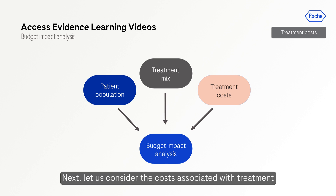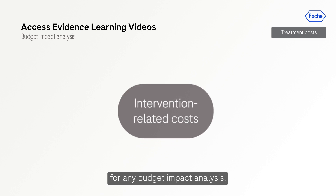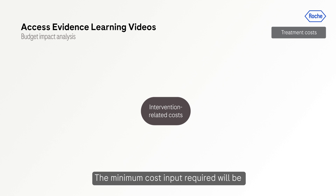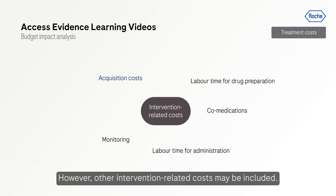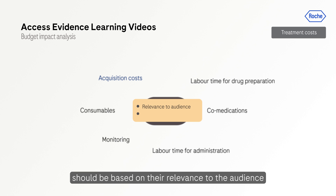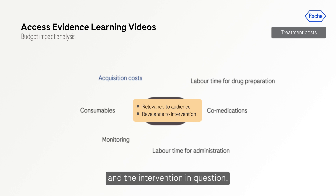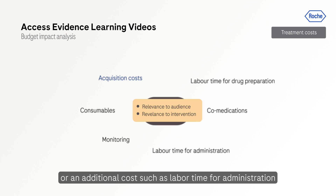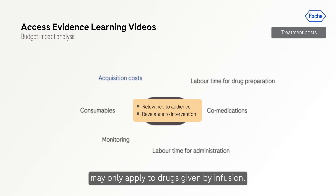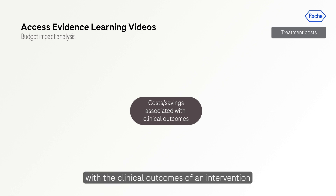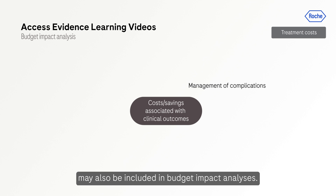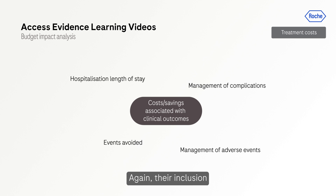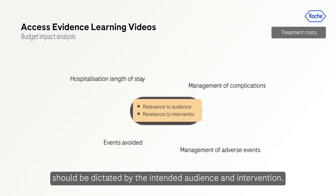Next, let's consider the costs associated with treatment. For any budget impact analysis, the minimum cost input required will be the intervention acquisition costs. However, other intervention-related costs may be included, and the decision to include them should be based on their relevance to the audience and the intervention in question. For example, a pharmacy budget holder will only be interested in drug costs, or an additional cost such as labor time for administration may only apply to drugs given by infusion. Costs and savings associated with the clinical outcomes of an intervention may also be included, and again their inclusion should be dictated by the intended audience and intervention.